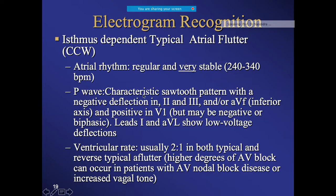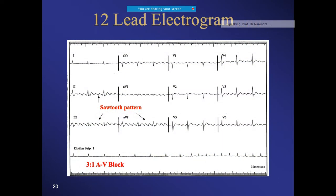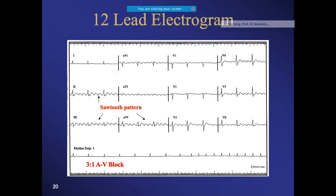The atrial rate in typical atrial flutter is characteristically 240 to 340 beats per minute and shows the classic sawtooth pattern. In counterclockwise flutter, there are negative deflections in the inferior leads (II, III, aVF) and a positive deflection in V1. The ventricular rate is most commonly 2:1 conduction, though 3:1 or other ratios can occur.